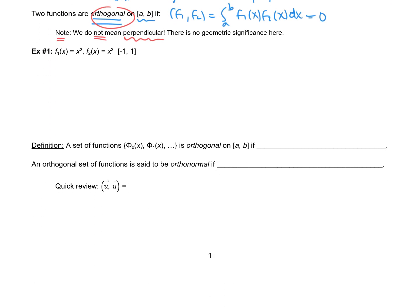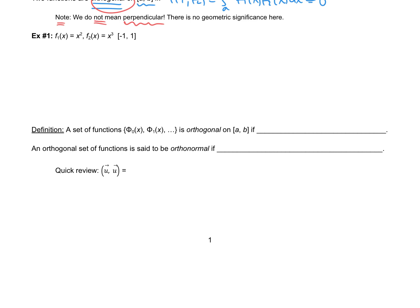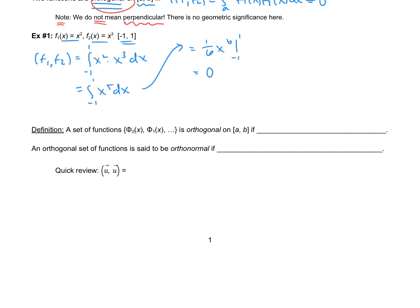Let's take a look at example number one. We are looking at functions f1(x) and f2(x) on the interval from negative one to one. To find the inner product of f1 and f2, we do the integral from negative one to one of x squared multiplied by x cubed dx. This is the integral from negative one to one of x to the fifth dx, which is one-sixth x to the sixth evaluated from negative one to one. We end up with an inner product of zero, which tells us that f1(x) and f2(x) are orthogonal on the interval negative one to one.